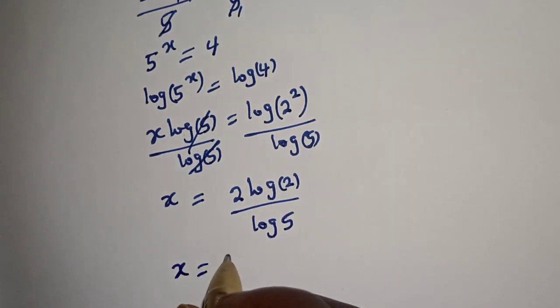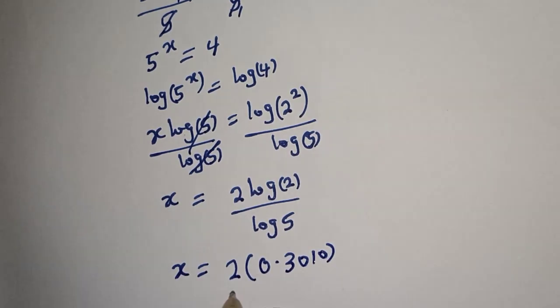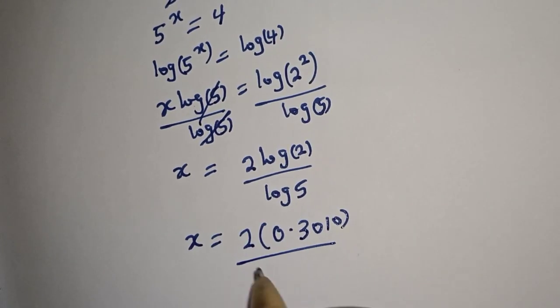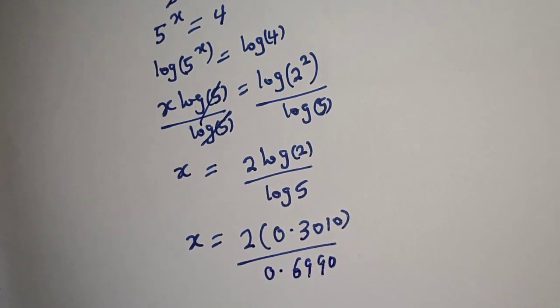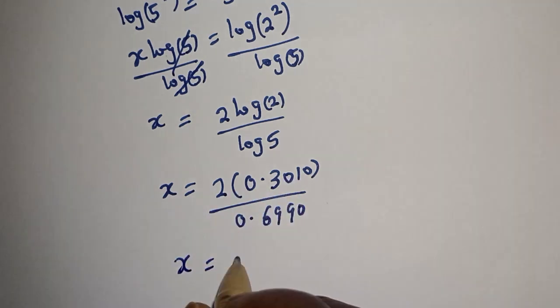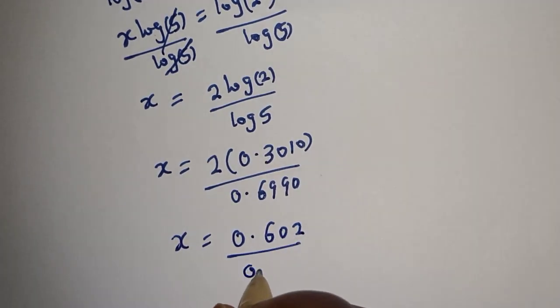Now, x is equal to 2 multiplied by log 2 is 0.3010 over log 5 is 0.6990. x is equal to, if you multiply this by this, we have 0.602 divided by 0.6990.